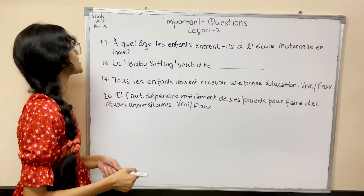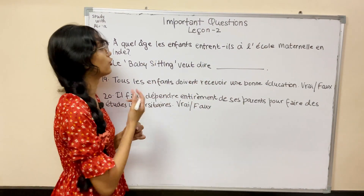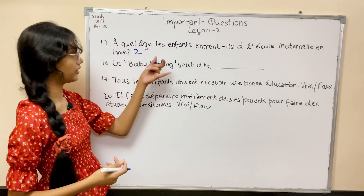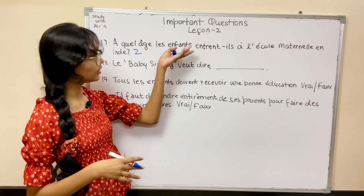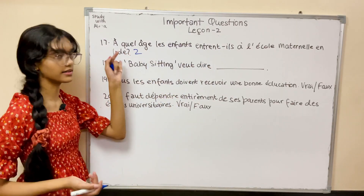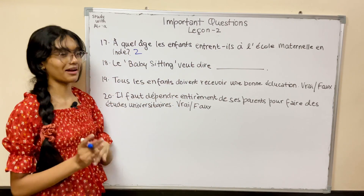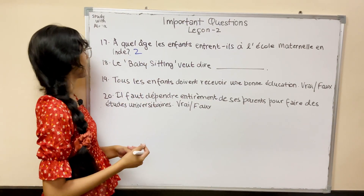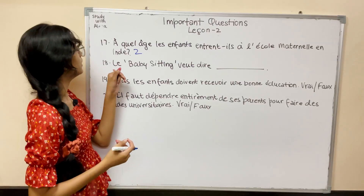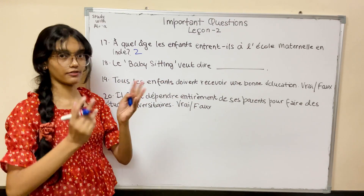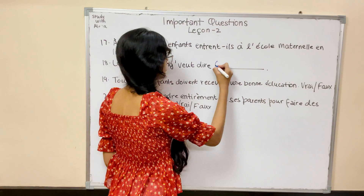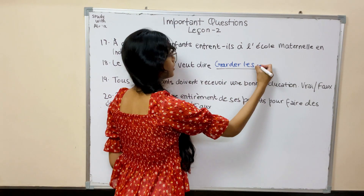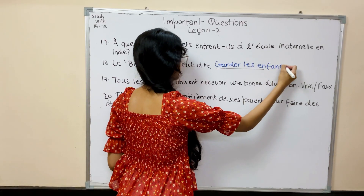Question 17: À quel âge les enfants entrent-ils à l'école maternelle en Inde? At what age do children enter preschool/kindergarten in India? That's at two years — remember to write the full answer, not just the number. Question 18: Le babysitting, qu'est-ce que c'est? What does babysitting mean? You have to explain in French: c'est garder les enfants — to look after the children.